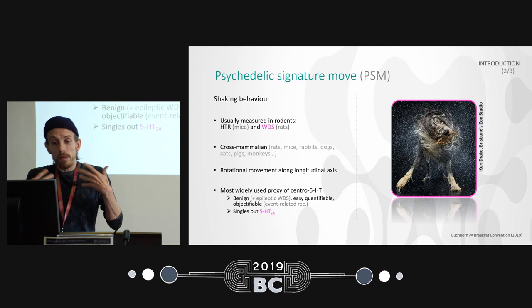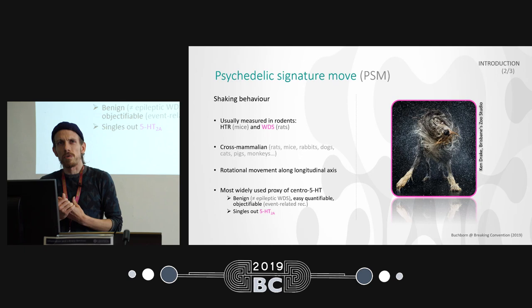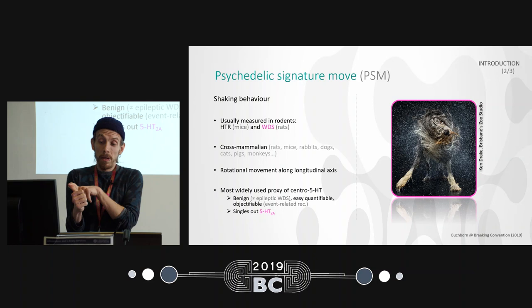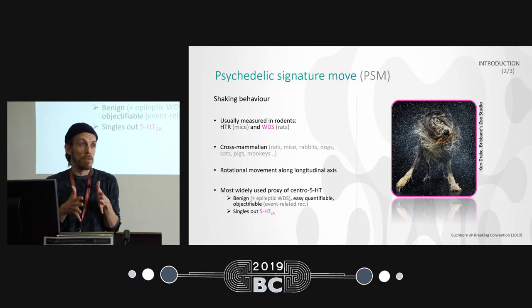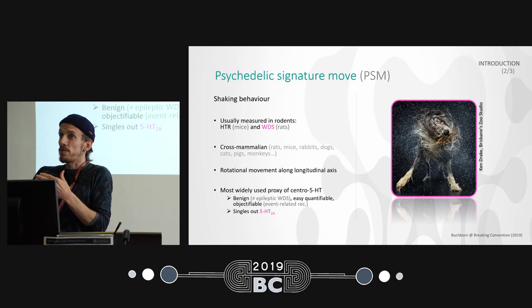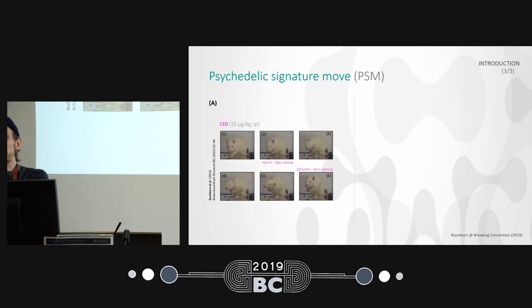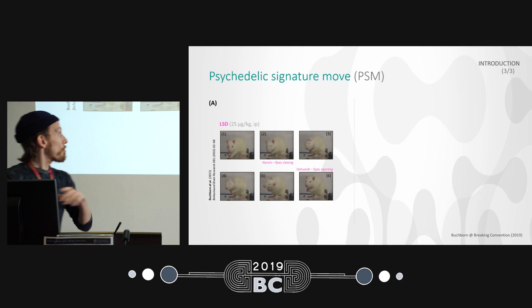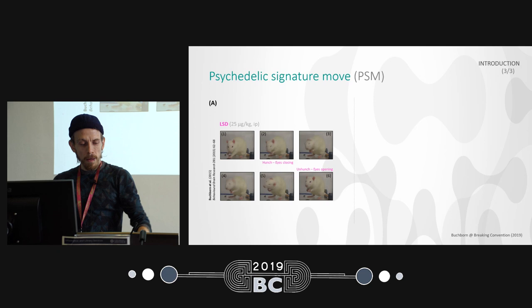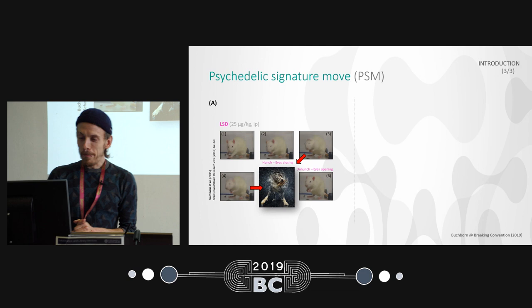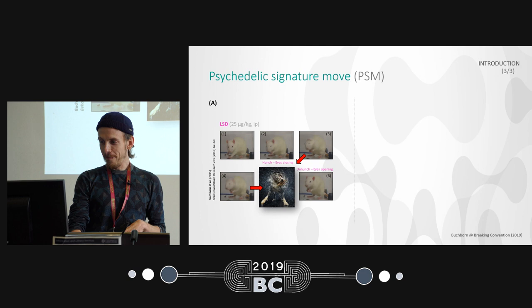This behavior is the most widely used proxy of central serotonin activity. Whenever people want to learn something about serotonin, they use this behavior as a readout. The reasons are it is benign, easy to quantify, easy to objectify, and it singles out one specific receptor — the serotonin 2A receptor — making it very interesting for psychedelic research. In rats treated with LSD at a very low dose of about 7 micrograms, you can see the characteristic shake, which is similar to a dog but actually cuter.